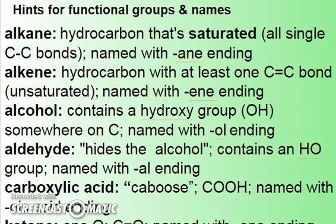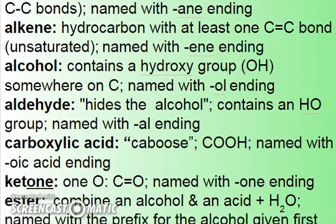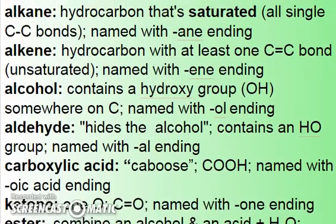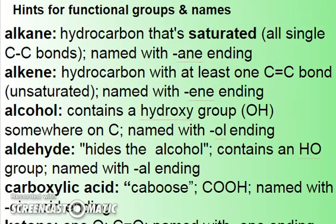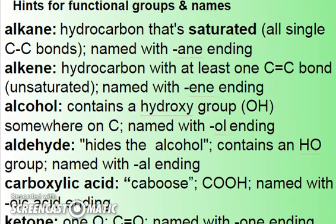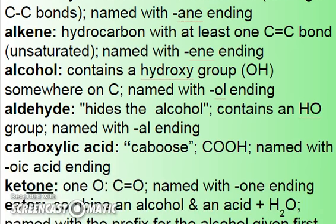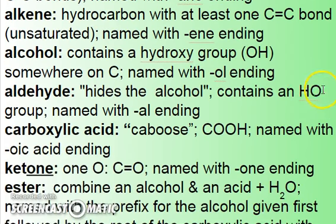You use hyphens to separate numbers from words, and commas to separate numbers from other numbers. I've also got a summary sheet here of the main families we're going to be studying in topic 10 — worth reading through. Looking at my hints: aldehydes, even though they look a lot like an alcohol, it's H-O because the hydrogen and oxygen are each separately bonded to the carbon.